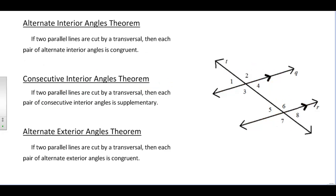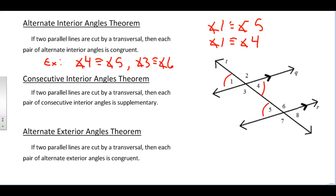There's an Alternate Interior Angles Theorem. It says if two parallel lines are cut by a transversal, then each pair of alternate interior angles would have to be congruent. Using the corresponding angles postulate, angles 1 and 5 have to be congruent, and angles 1 and 4 are vertical angles, so by the transitive property, angles 4 and 5 would also have to be congruent. Angles 3 and 6 would also have to be congruent — they're another set of alternate interior angles.